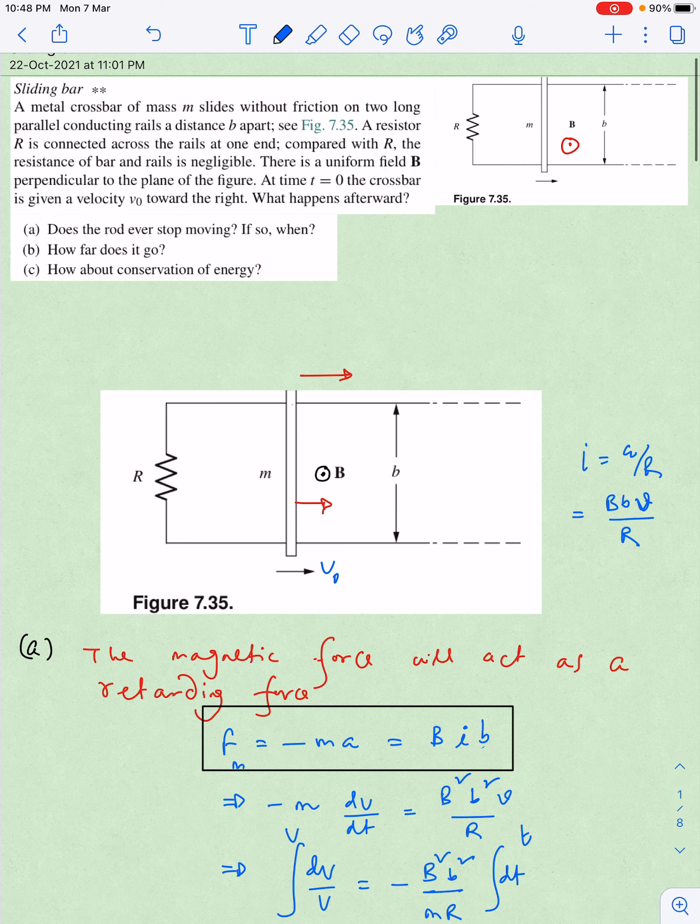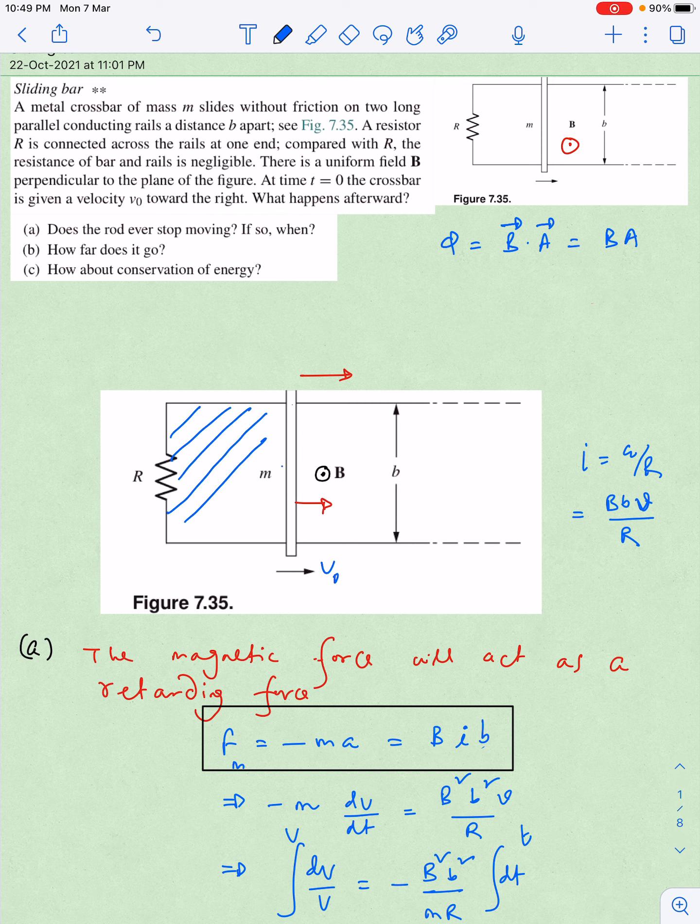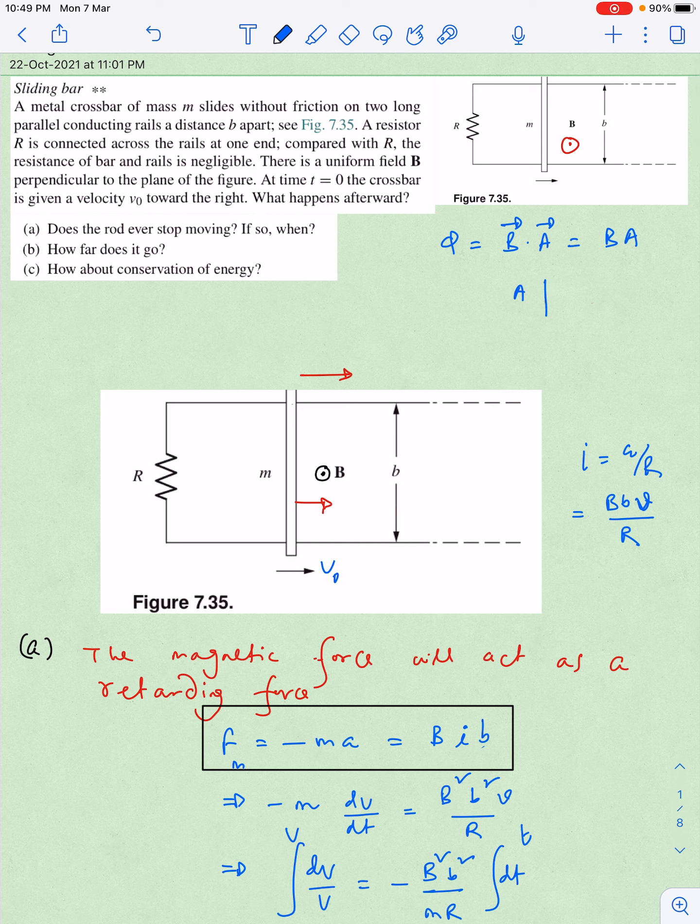When the velocity is given towards right, we know that magnetic flux phi is equal to basically B vector dot A vector. We have taken that the magnetic field is perpendicular and upward the page, so B and A are parallel to each other, so that means it is simply B into A. When it is moving in the rightward direction, this loop area is obviously increasing, so that means A is increasing, in the sense phi outward magnetic flux is also increasing.